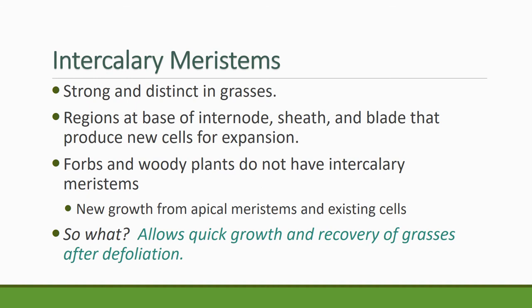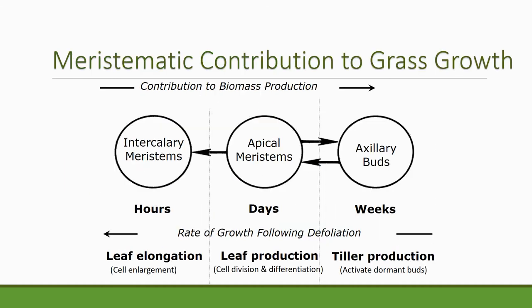Think about it — when you mow your lawn, all of those meristems are at the base of the plant. When you mow it, it starts to look ragged right away, and that raggedness occurs because of the intercalary meristems responding. Intercalary meristems respond very quickly — within hours of disturbance, they'll start to expand and contribute to growth. Apical meristems are at the tip of the plant, continuing to grow and differentiate new tillers, leaves, and sheaths — quite important for biomass but controlling just that one stem or tiller, so their contribution to biomass is moderate.